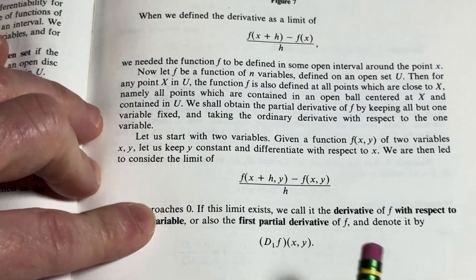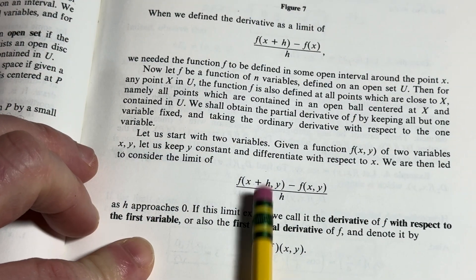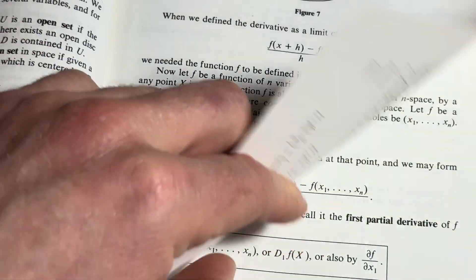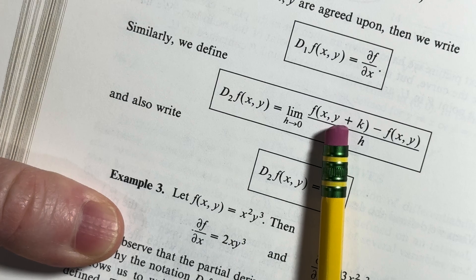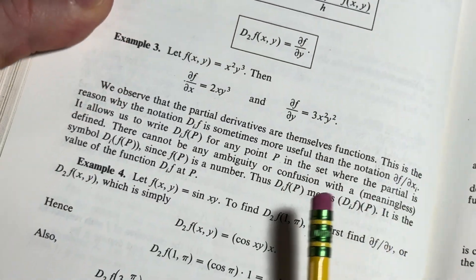So over here, h was approaching 0, right? So here it should be an h here. And if you want to use k, you can. But then the k should approach 0.